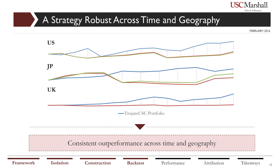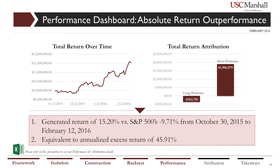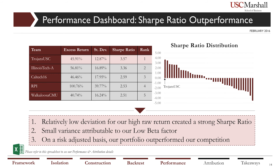The main takeaway of our backtesting is that our strategy is robust and generates consistent outperformance across time and geography. Our portfolio generated a 15.2% return relative to the S&P 500's 9.71% loss over the same three-and-a-half month period from October 30, 2015 through February 12, 2016. Most of our return was attributable to success in our short portfolio. Our performance equates to an annualized excess return of 45.91% based on a geometric mean of our daily return. We take pride in achieving a Sharpe ratio of 3.57 — the highest in the competition — which we attribute not only to our high raw return but also to our focus on low beta, allowing us to generate strong returns with low volatility.